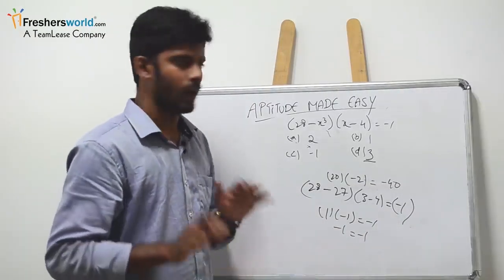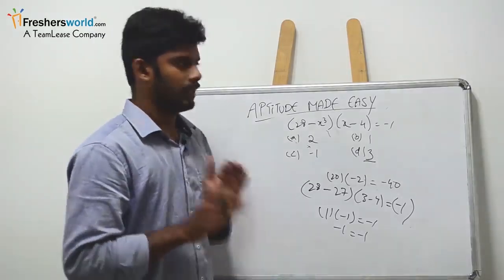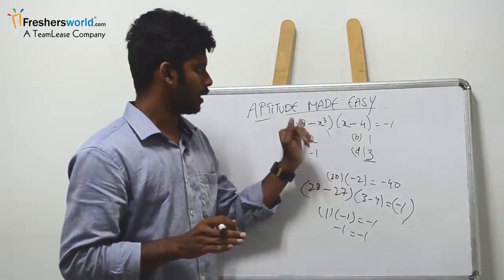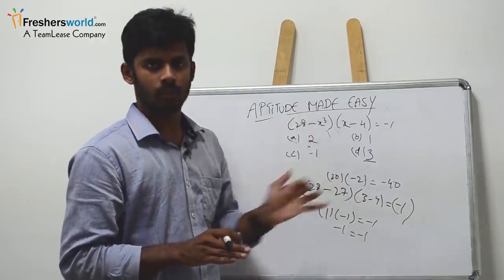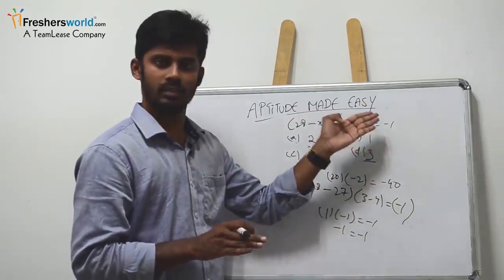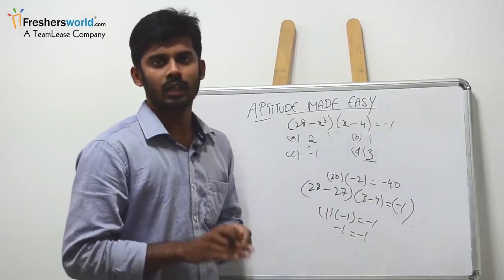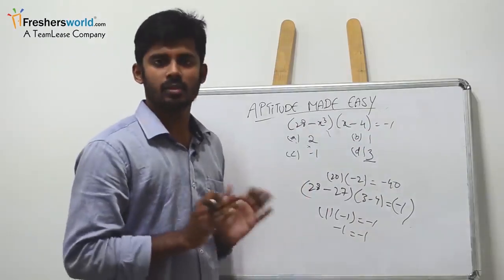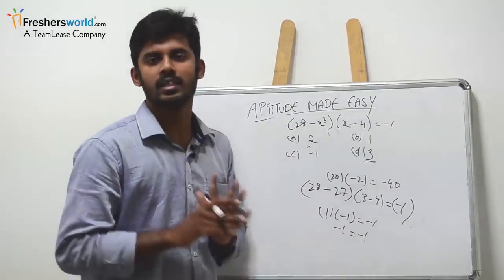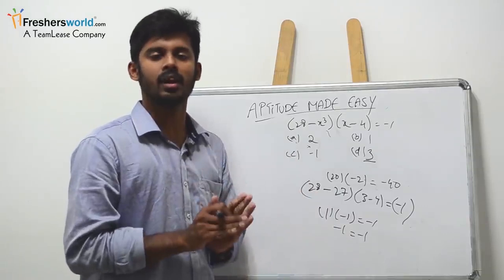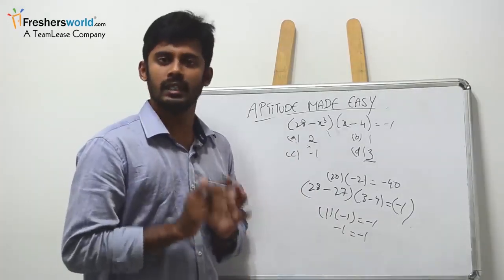LHS equals RHS — minus 1 equals minus 1 — so the problem is solved. Some people keep on trying to solve the full equation, which takes a lot of time. This elimination method is the best way to solve this kind of problem. There is also another easy method which will be covered in the next video.